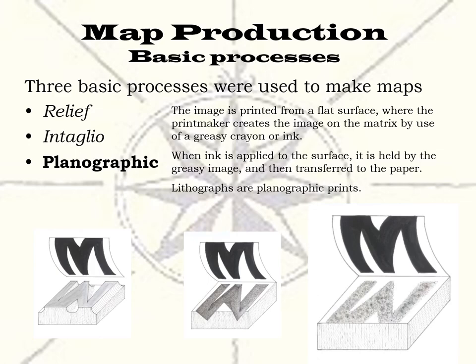The last basic type of map are those made by a planographic process. In a planographic print, the image is printed from a matrix with a flat surface, where the image was created on the surface by the use of a greasy crayon or ink. To create a planographic print, water, which is repulsed by the greasy image, is washed onto the surface, and then ink, which is held by the greasy image, is applied to the matrix. A press is then used to transfer the image to the paper. Lithographs are planographic prints.